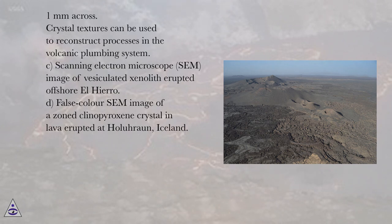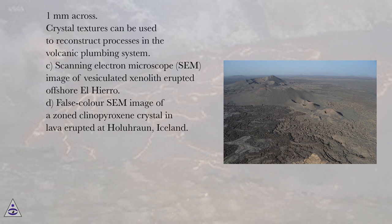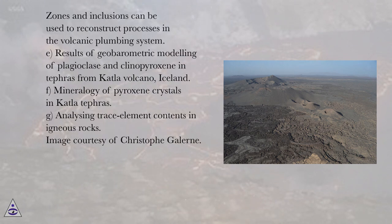C: Scanning Electron Microscope (SEM) image of a vesiculated xenolith erupted offshore El Hierro. D: False color composite image of a zoned clinopyroxene crystal in lava erupted at Holuhraun, Iceland. Zones and inclusions can be used to reconstruct processes in the volcanic plumbing system.